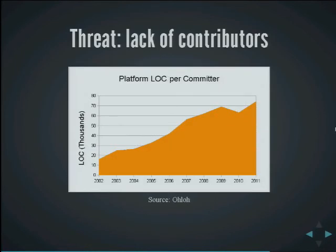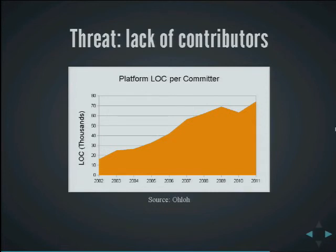There's no discussion of the future of Eclipse without talking about the problem of lack of contributors. When the E4 project started, this was a big discussion: how do we attract more people to be committers on the platform? This slide shows the number of lines of code in the platform versus the number of contributors in any given year. Last year, for every contributor — not just committers, but contributors — there were 70,000 lines of code being maintained. This trajectory is not healthy. We can't go on with an increasing level of code and a decreasing number of contributors.